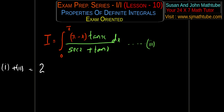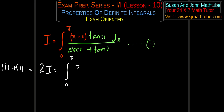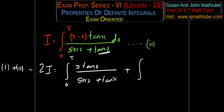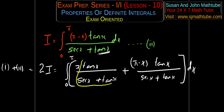So I plus I gives 2I. They share the same integral limits. Writing both together: x·tan x over (sec x plus tan x) plus (π minus x)·tan x over (sec x plus tan x), total dx. I can see a common factor — I'll use different colors to highlight it. The yellow quantity tan x over (sec x plus tan x) comes out common, leaving x from the first term and π minus x from the second term.